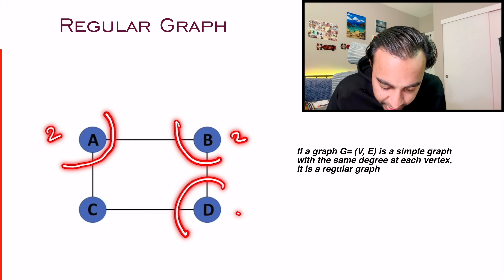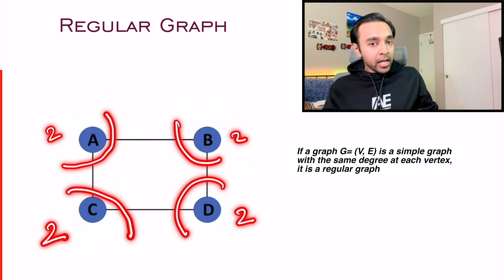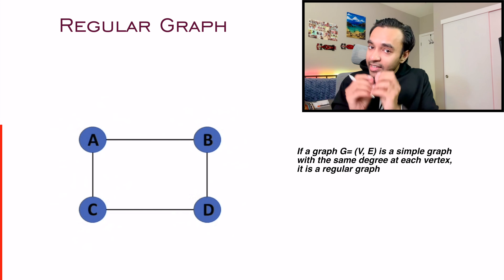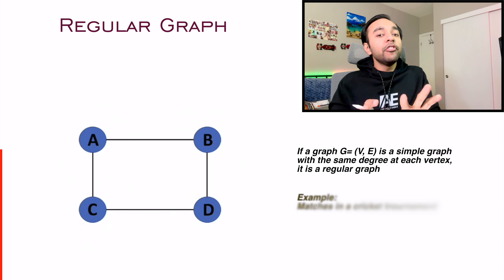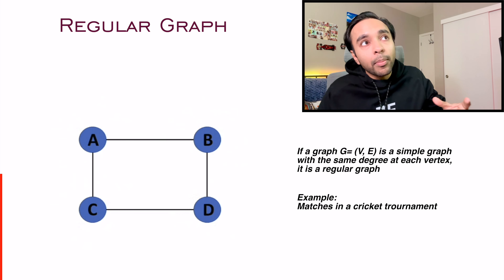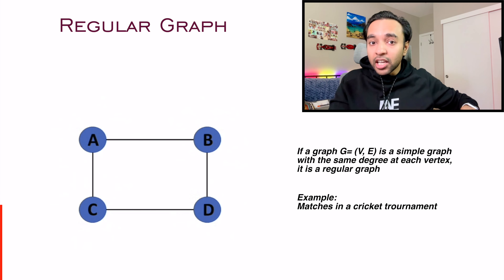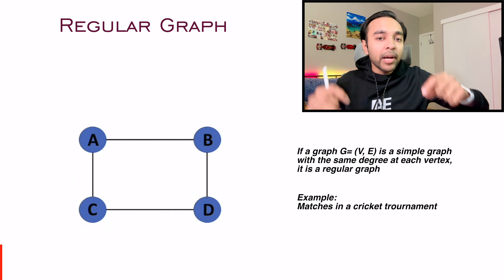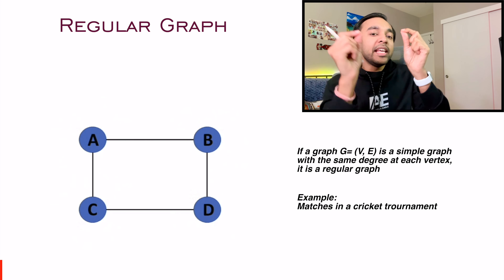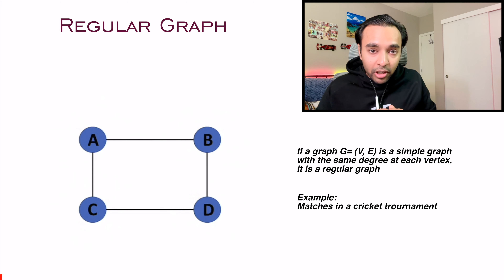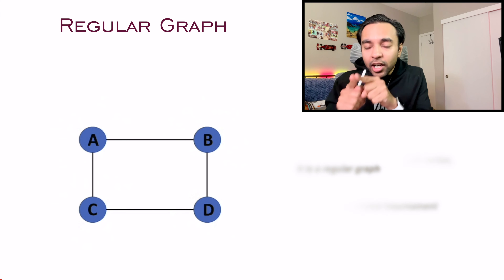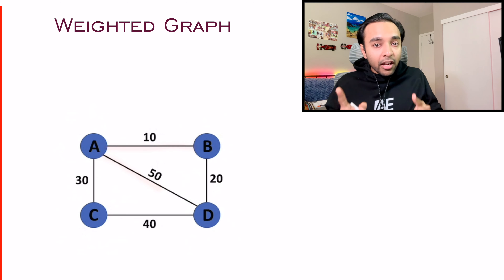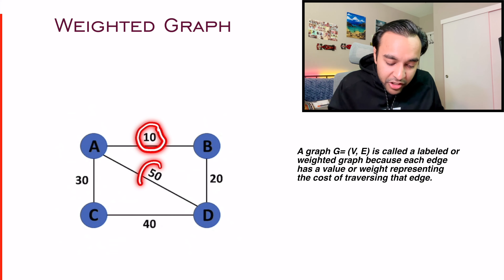The next type is known as a regular graph. If you remember, we talked about the degree of each node. When the degree of all nodes in the graph is the same, that graph is known as a regular graph. A real world example is any sporting tournament — in the Cricket World Cup, each team plays the same number of matches. So if there are 8 teams and each plays 7 matches, that is what a regular graph looks like.